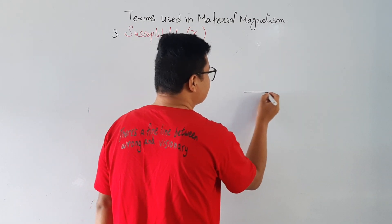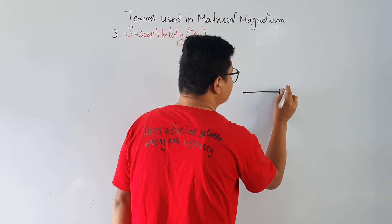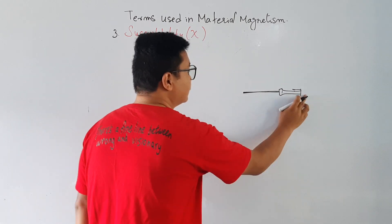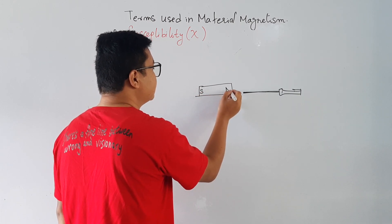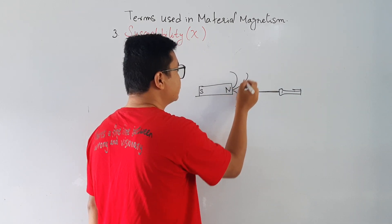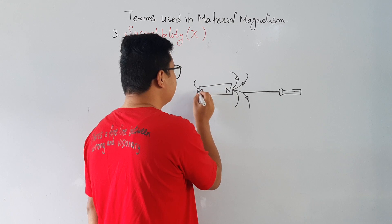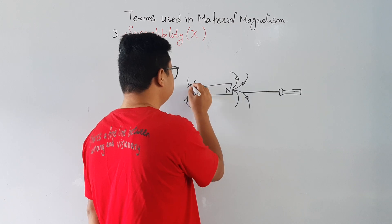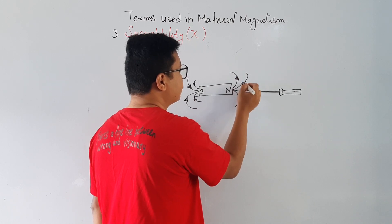So this is my screwdriver. And we put a bar magnet here. This is the south pole and this is the north pole, and it has got the magnetic field. This magnetic field is magnetizing this magnetic material, which is my screwdriver.